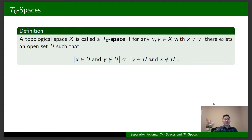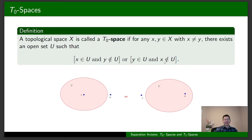Let me begin with the definition of a D0 space. A topological space X is called a D0 space if for any two distinct elements x and y, there is an open set U such that x belongs to U and y doesn't belong to U, or y belongs to U and x doesn't belong to U. Let's look at a figure to understand this property — if we take any two distinct elements x and y, there is an open set U that contains x and y doesn't belong to U, or U contains y and U doesn't contain x.